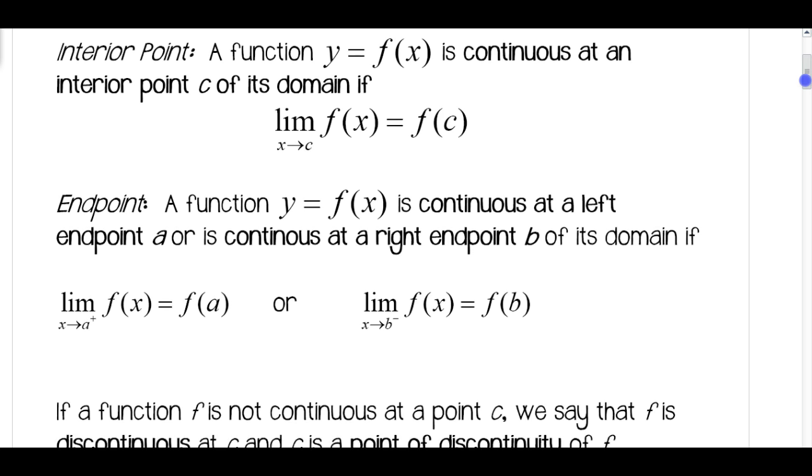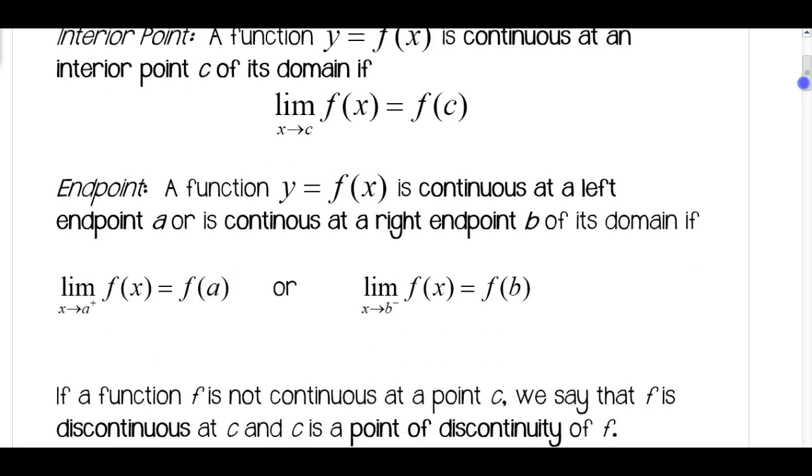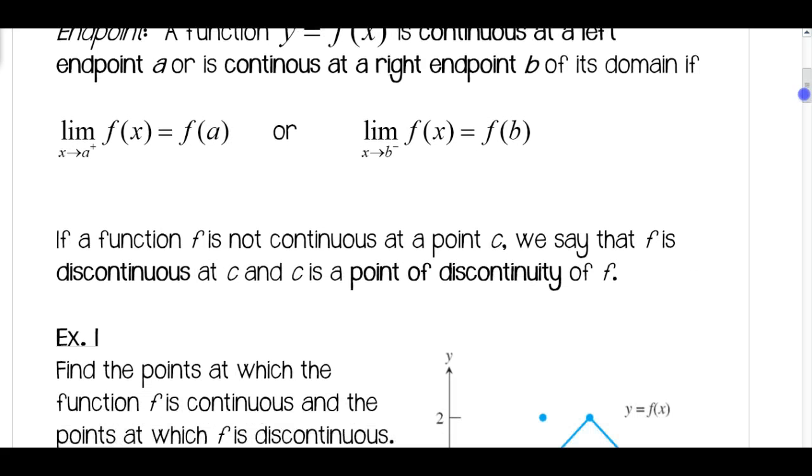We need to make sure that these conditions exist to determine the continuity. If a function f is not continuous at a point c, we say that f is discontinuous at c and c is a point of discontinuity of f. So just some terminology there as well.